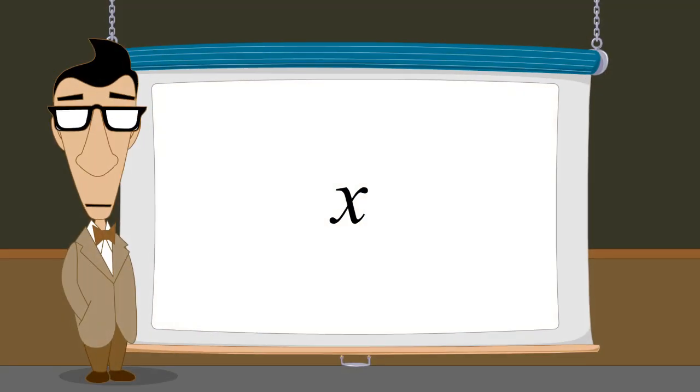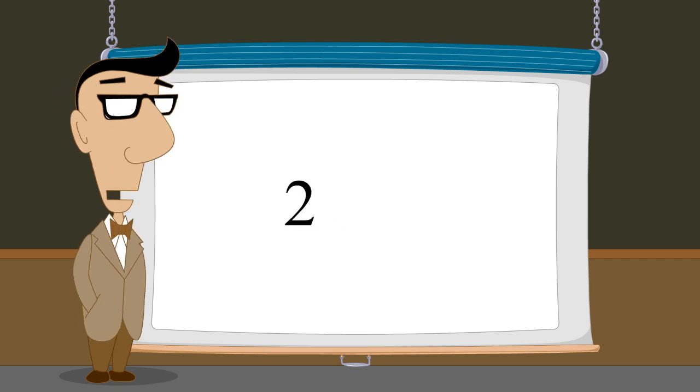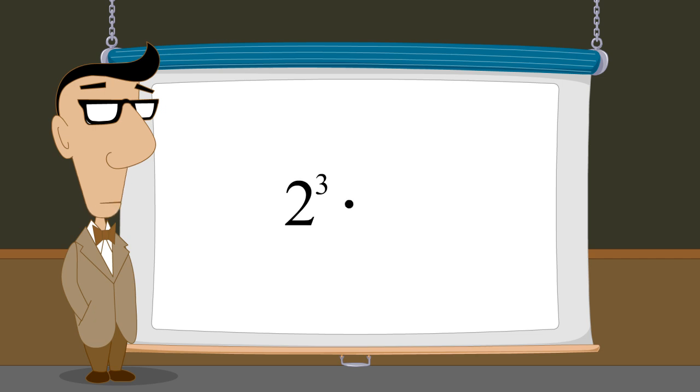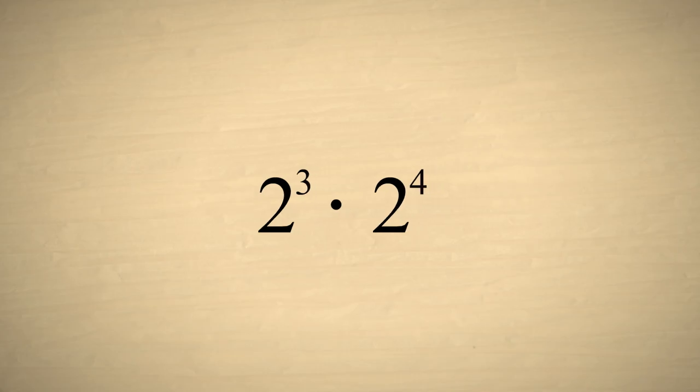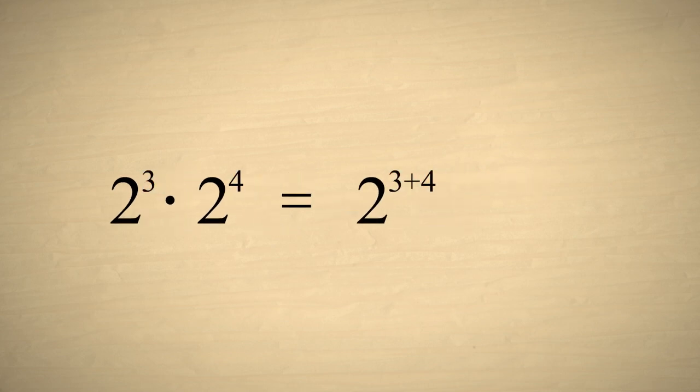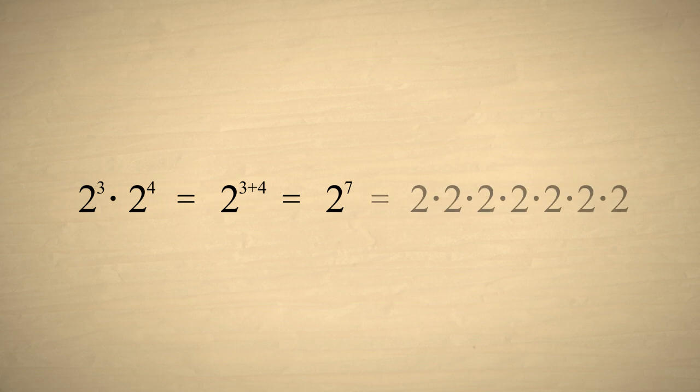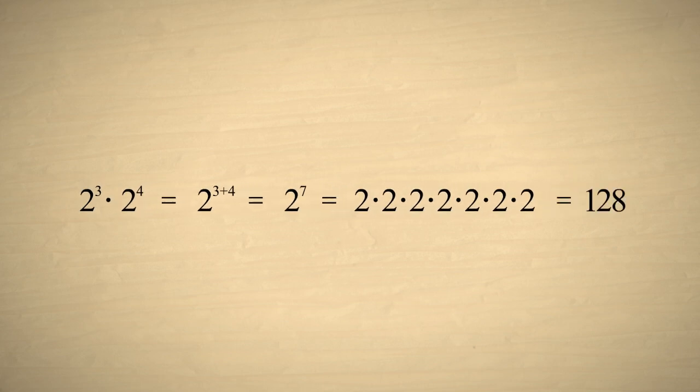In the next example, the terms in the expression have bases which are numbers instead of variables. Let's simplify two cubed times two to the fourth. Adding the exponents we get two to the seventh power which is the same as seven twos multiplied together or one hundred twenty-eight.